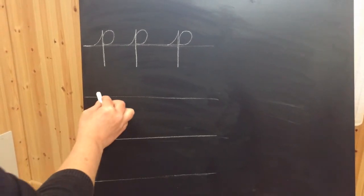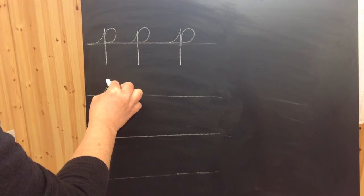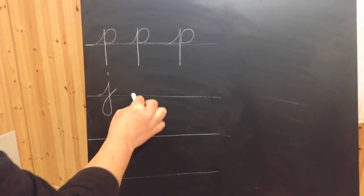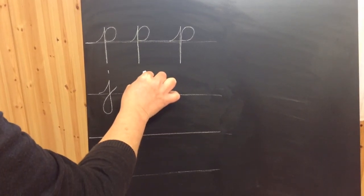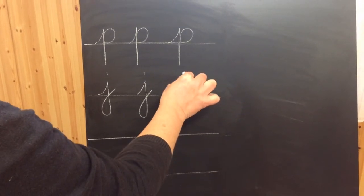The next one is J, slightly easier. Lead in, under the line and a loop, finally the dot. Lead in, under the line and loop, dot.